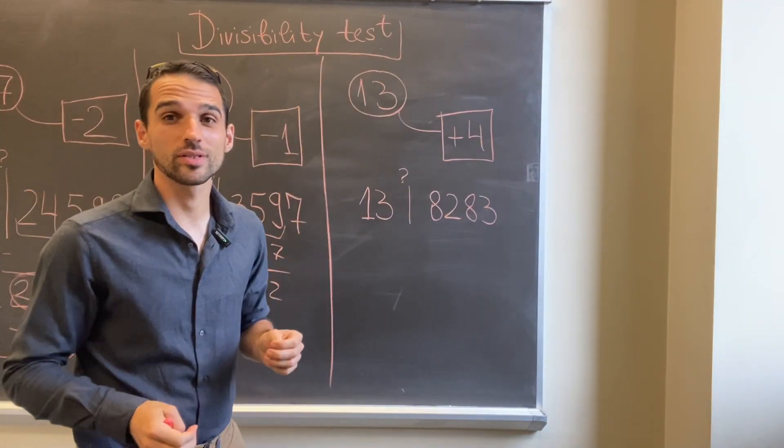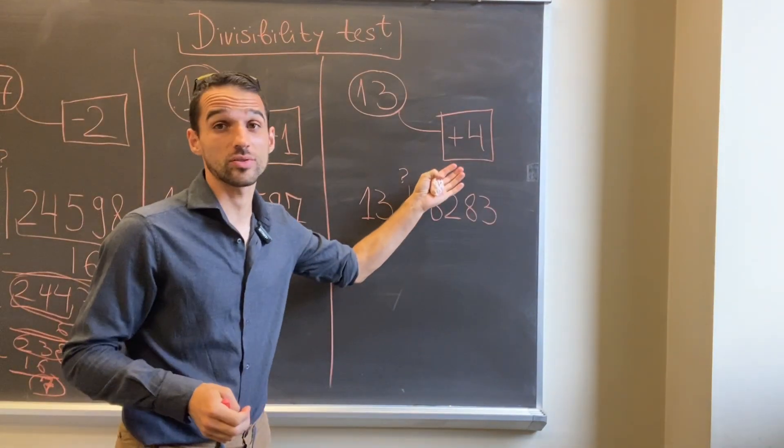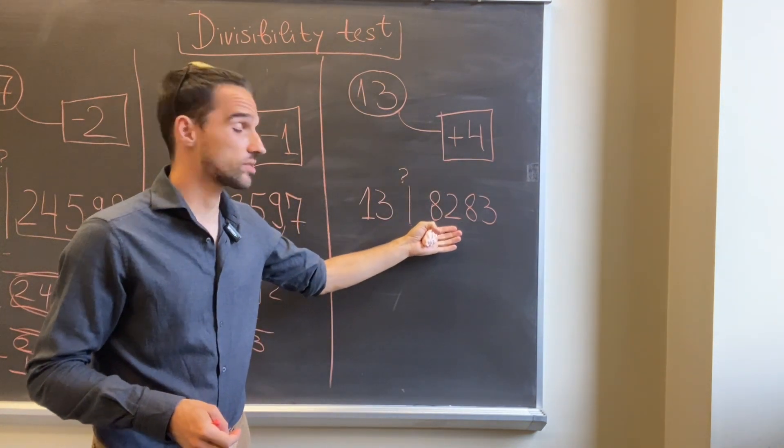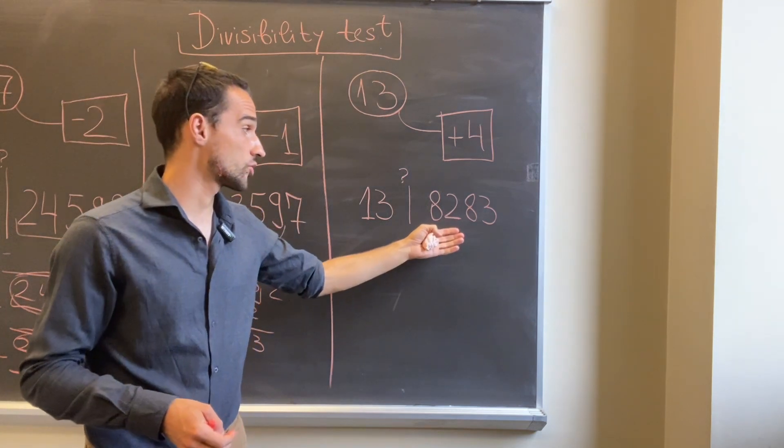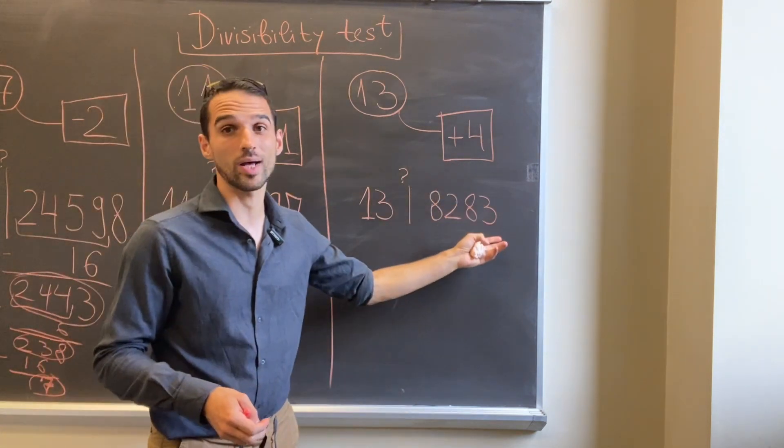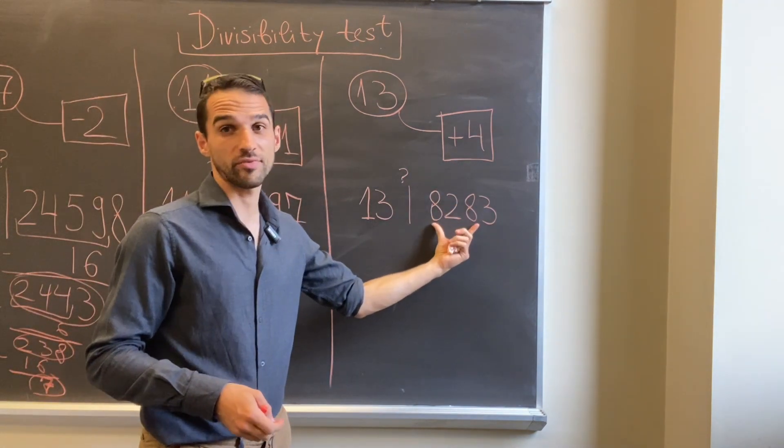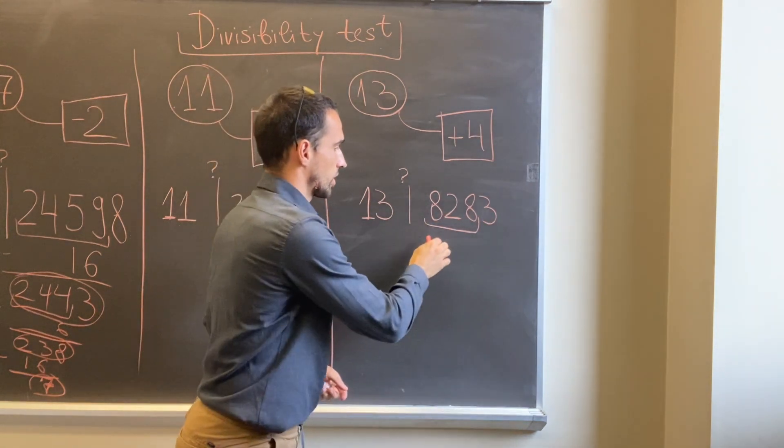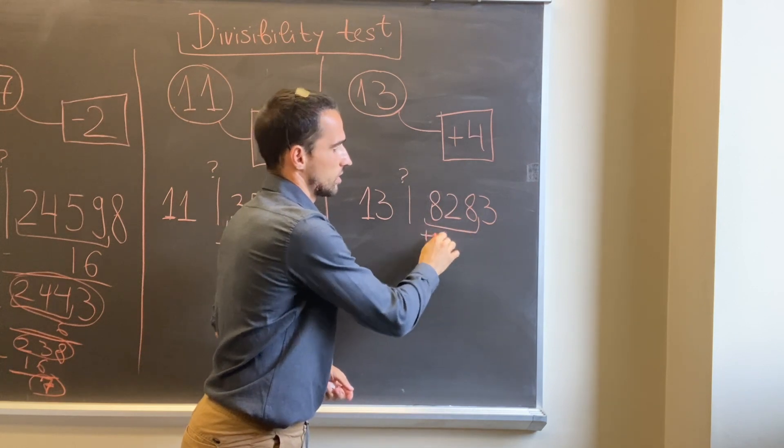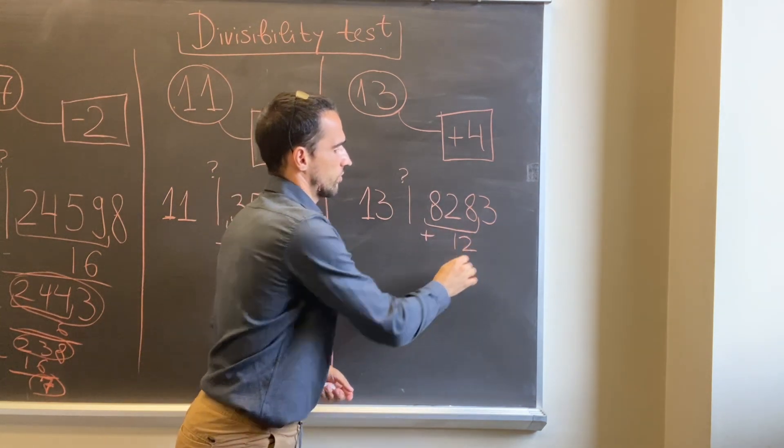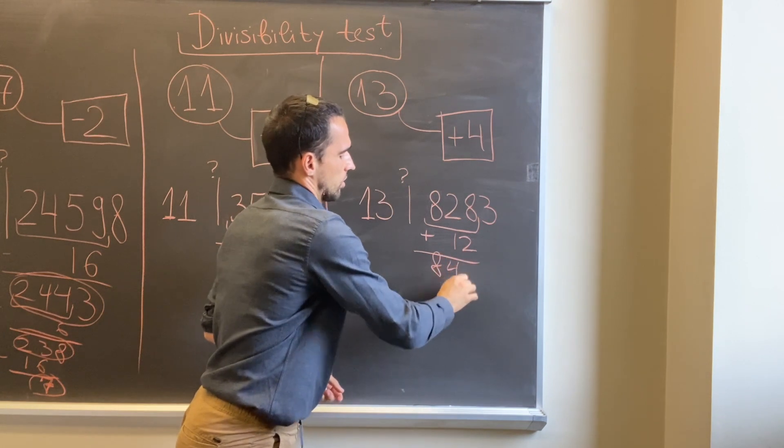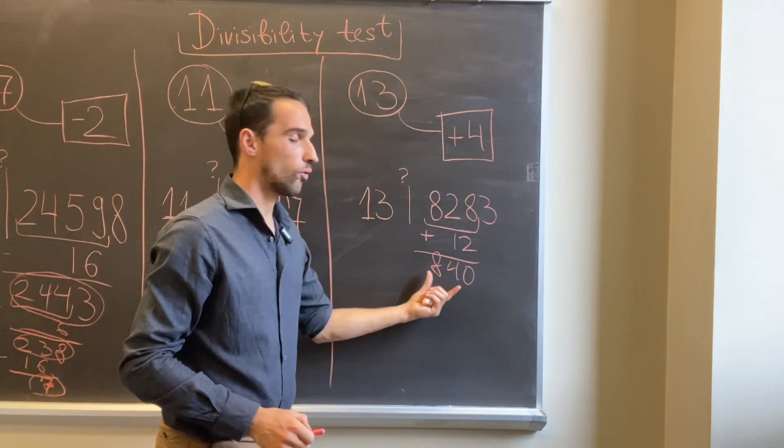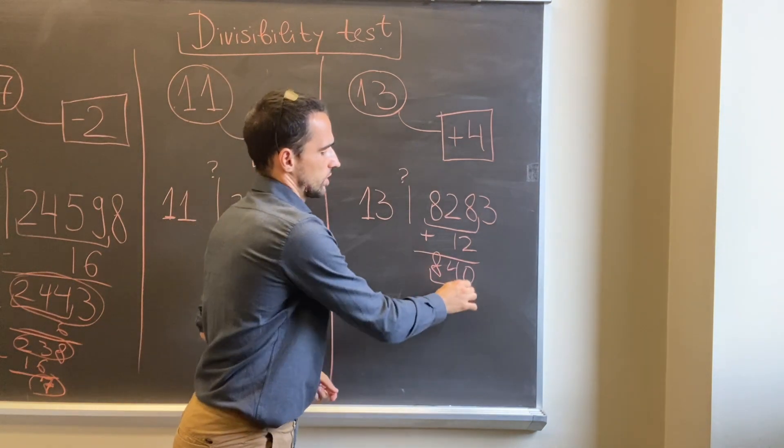One last example, this time with 13. The magical constant is plus 4 here. If we want to see whether this four digit number is divisible by 13, we should add four times the last digit to the prefix. After the first step we will get 828 plus 12, so we get 840.